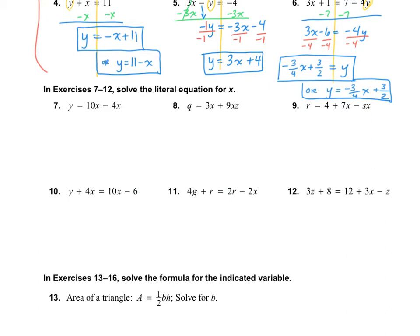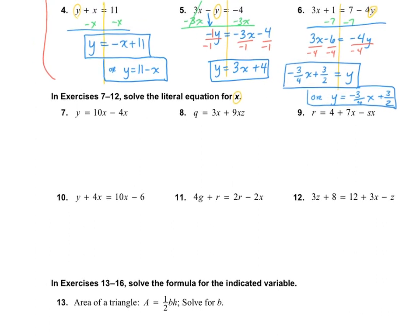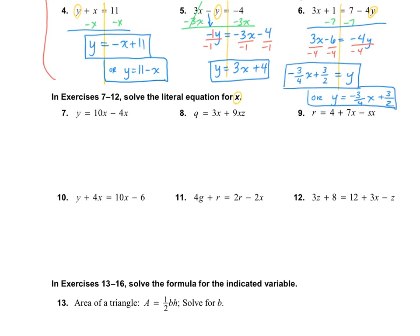In exercises 7 through 12, this time we're solving the literal equation for X, not for Y. I'm going to draw my line and circle my X. I've got two of them, so I'm going to combine them together first. That would be Y equals 6X. Now I still need to solve for X, so I need to divide out the 6 on both sides. My answer is Y over 6 equals X.